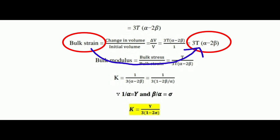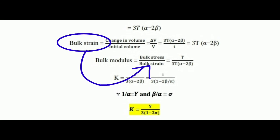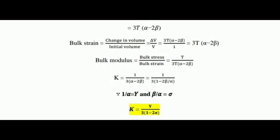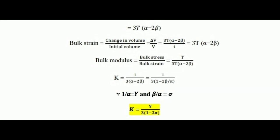Bulk modulus k equals bulk stress divided by bulk strain. Bulk stress is t and bulk strain is 3t(alpha minus 2 beta), so k equals t divided by 3t(alpha minus 2 beta). The t terms cancel, giving k equals 1 divided by 3(alpha minus 2 beta), which equals 1 divided by 3 times (1/alpha minus 2 beta/alpha). Since 1/alpha equals Young's modulus Y and beta/alpha equals Poisson's ratio sigma, the final equation is k equals Y divided by 3(1 minus 2 sigma).